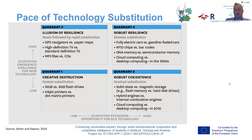Quadrant four, called 'robust resilience,' is the sector where substitution took place in a smoother manner. Good examples include fully electric cars versus traditional gasoline fuel cars, RFID chips versus barcodes, DNA memory versus semiconductor memory used in biomedical sectors, and cloud computing versus desktop computing in the 1990s. All these quadrants evidence how technology across the world has shifted and advanced.